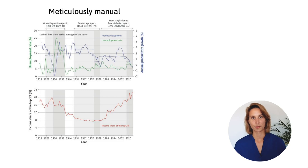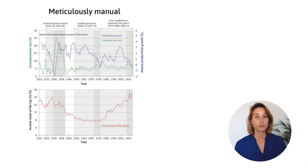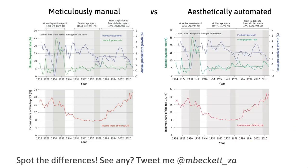I'd like to show you some of the outputs of what we achieved. On the left hand side, you can see the original meticulously manual plot. The purpose here is not to read and understand these graphs, but rather to make a comparison between this and the aesthetically automated. This here is our example from the beginning from the economics lecture with an additional plot below. If you do spot any differences, please do tweet me as I do really love doing this.